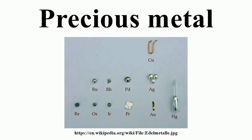A precious metal is a rare, naturally occurring metallic chemical element of high economic value. Chemically, the precious metals tend to be less reactive than most elements. They are usually ductile and have a high luster. Historically, precious metals were important as currency but are now regarded mainly as investment and industrial commodities. Gold, silver, platinum, and palladium each have an ISO 4217 currency code.